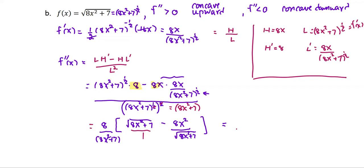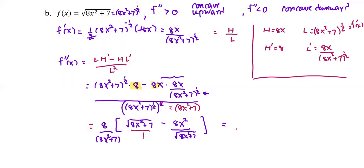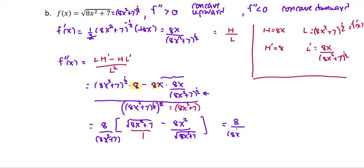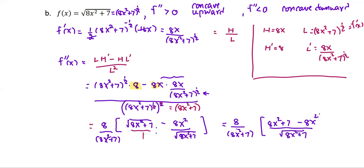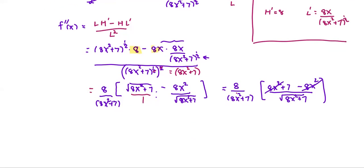Now we simplify the terms in the bracket and consolidate into one fraction with a common denominator. We get 8 over 8x squared plus 7. In the bracket, multiply top and bottom by the square root of x squared plus 7, so it becomes 8x squared plus 7 minus 8x squared, all divided by the square root of 8x squared plus 7. The 8x squared terms cancel, giving the second derivative in the form of 8 times 7, which is 56, divided by 8x squared plus 7 multiplied by the square root of 8x squared plus 7.